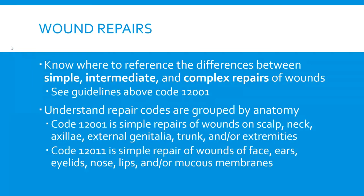You're going to see some questions on wound repairs from the integumentary system of the surgery section in CPT. You will need to know the difference between a simple, intermediate, and complex repair. The guidelines that define what these are are around or beside code 12001 in your CPT book. Also understand that repair codes are grouped by anatomy, and you need to thoroughly review the code description. Code 12001 is a simple repair on the scalp, neck, axillae (which is the armpit area), genitalia, trunk, and/or extremities — arms and legs. The trunk being our middle body, our abdomen and chest.